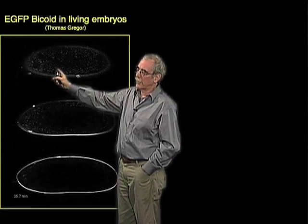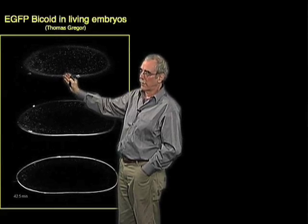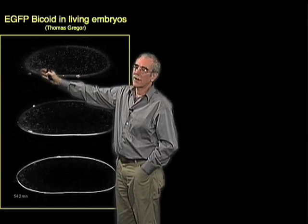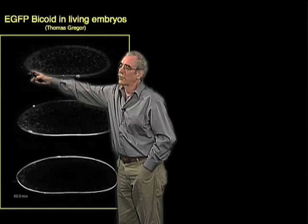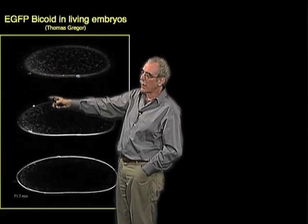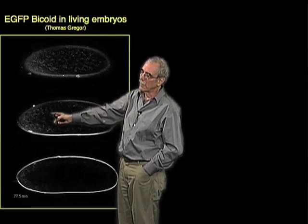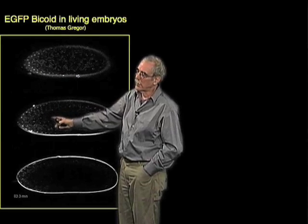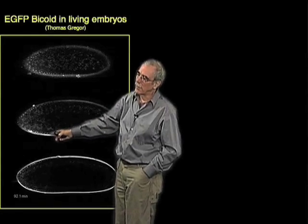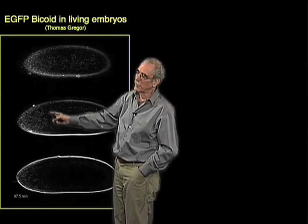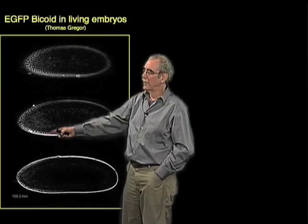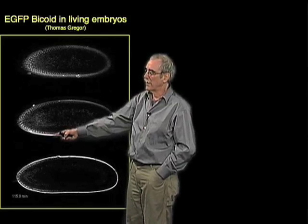In the embryo immediately after fertilization, you can see some movement in the cytoplasm. What you can't see yet is an obvious difference in fluorescence concentration between the anterior and posterior ends. But over the 2-hour period, as the nuclei make it out to the surface, you can see the accumulation of bicoid in nuclei at the anterior end of the egg.